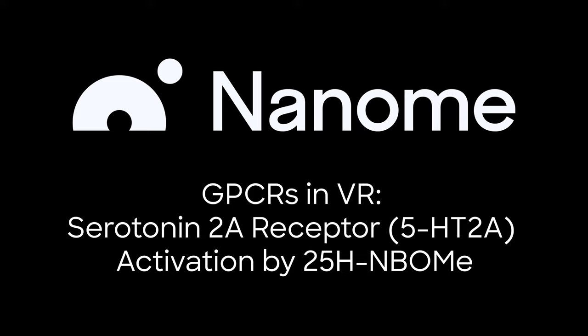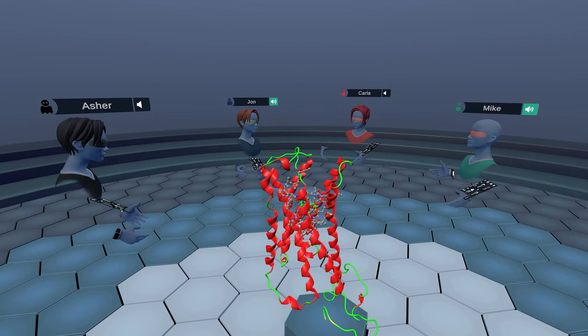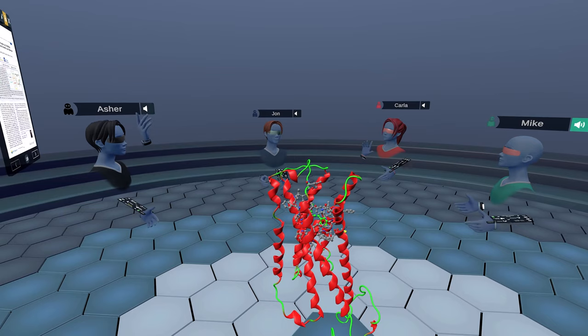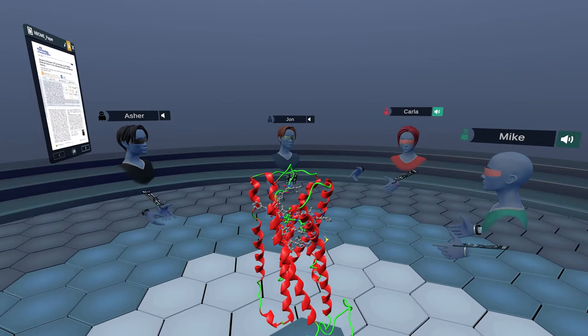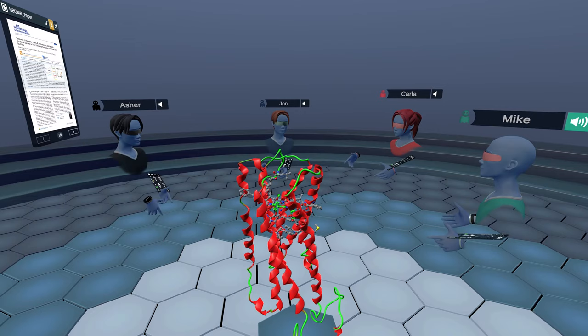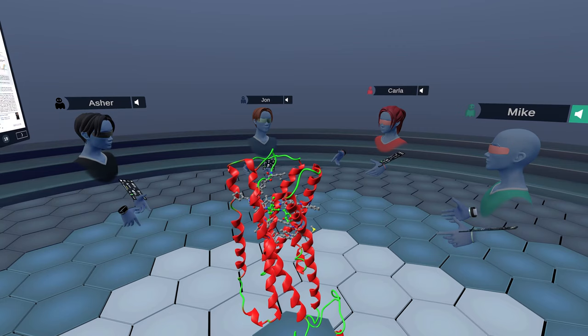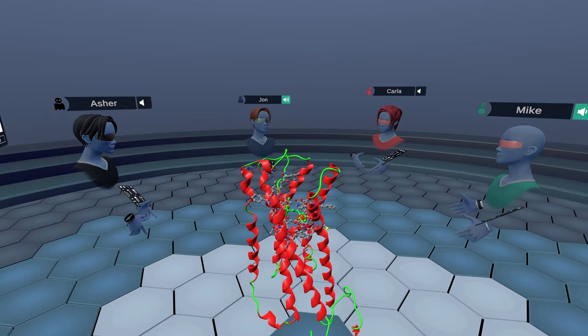Welcome to Nanome. We're continuing our GPCR series today and John, Carla, and I are joined by a special guest, Asher Brandt, who has recently published a paper in ACS Pharmacology and Translational Science on serotonin 2A receptor ligands. These phenethylamines are known to be psychedelics, but there's also a lot of potential for psychedelic therapies now. We're going to turn it over to Asher and hear about the research his group has been doing.